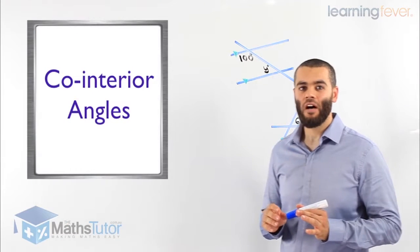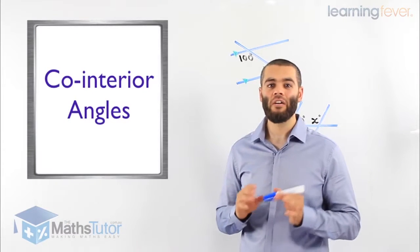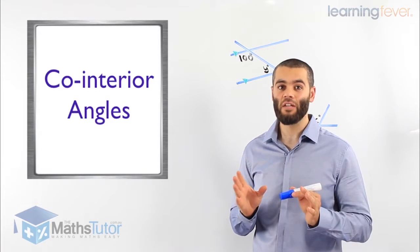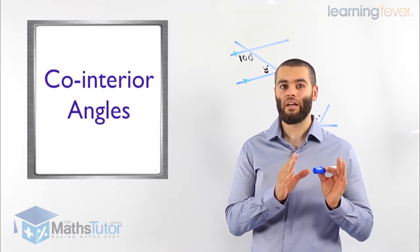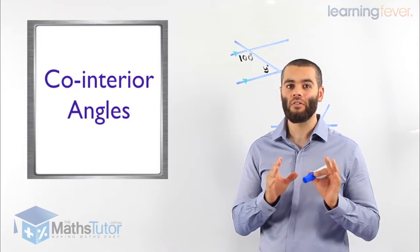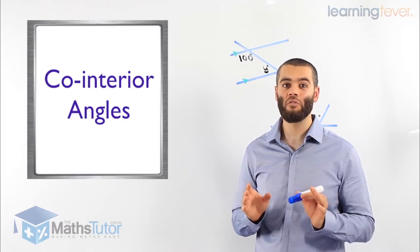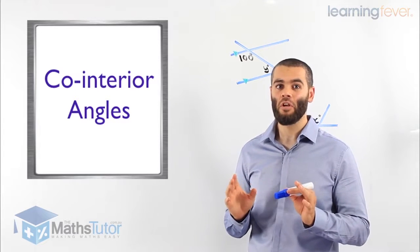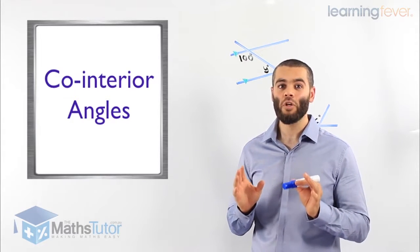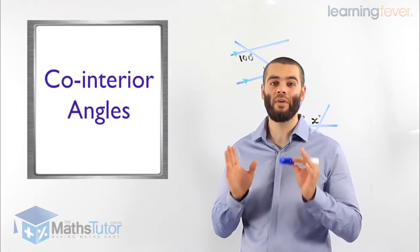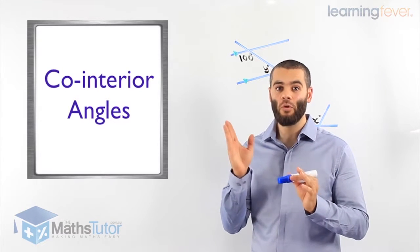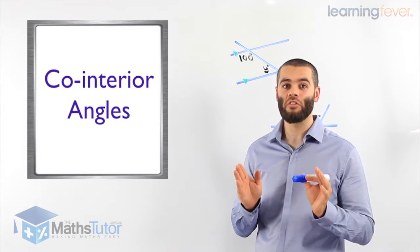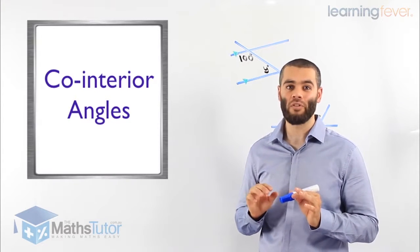I'm going to show you how to identify and locate co-interior angles. We've learnt about alternate angles, we've learnt how to locate and identify corresponding angles. The last one is called co-interior angles. Co-interior angles are also created when we have parallel lines and a transversal crossing or intersecting them, and more than one angle is created and we have to find those co-interior angles.